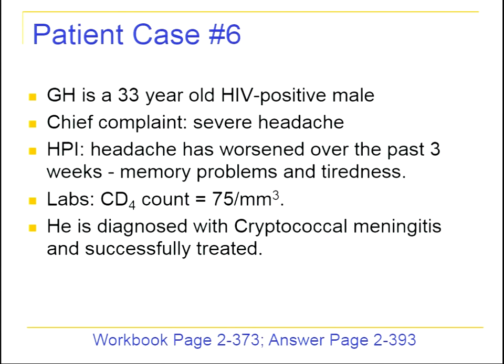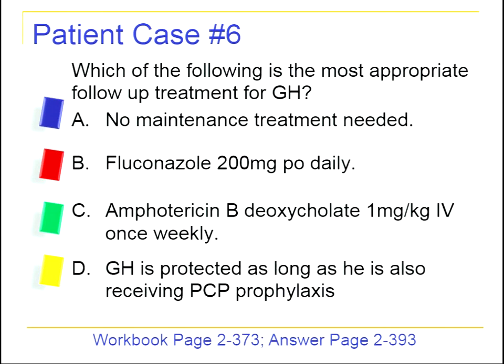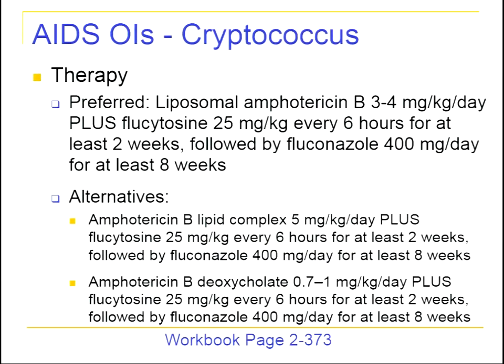Case 6: GH is a 33-year-old HIV-positive man presenting with severe headache worsening over three weeks, memory problems, and fatigue. He has refused antiretroviral therapy and his CD4 count is 75. He is diagnosed with cryptococcal meningitis and successfully treated. After successful treatment, what is the most appropriate follow-up? Options include no maintenance therapy, fluconazole 200 mg daily, amphotericin B once weekly, or protection via PCP prophylaxis.